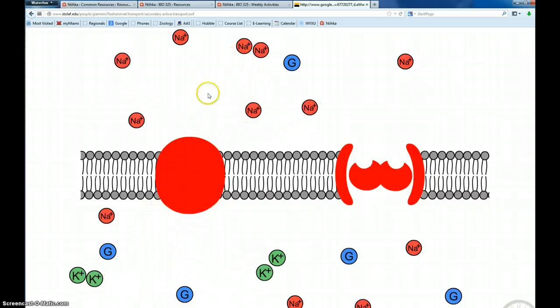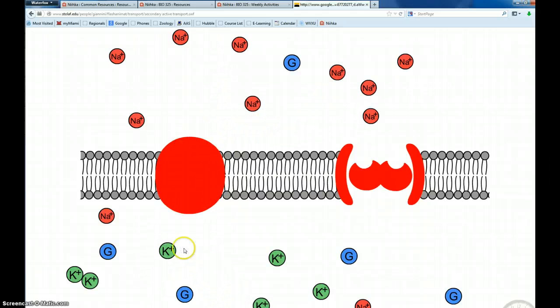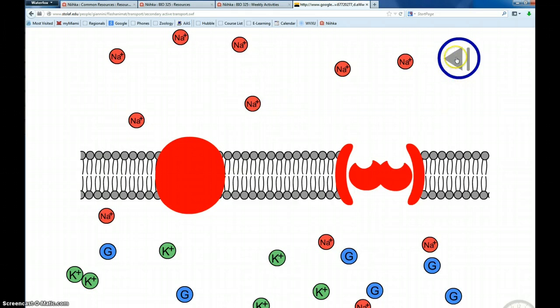Notice we're getting more sodiums out here and fewer sodiums in here. Okay, we're going to run the pump one more time. Now, the sodium will bind in here along with the glucose. And that moves the glucose in against its gradient. Because notice there is more glucose inside the cell than there was outside the cell. So let's see that again.